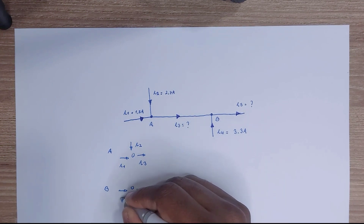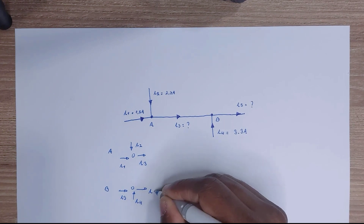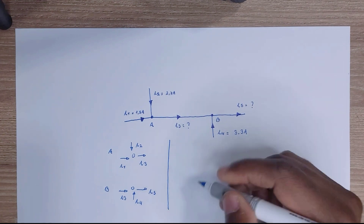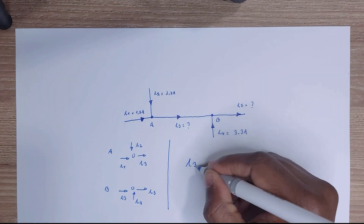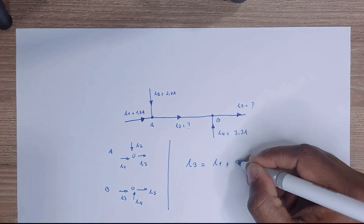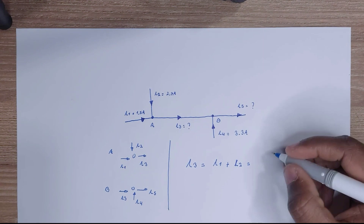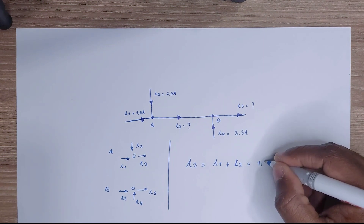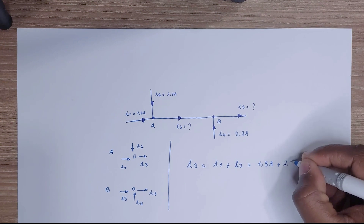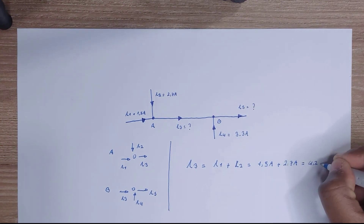Our problem here is to calculate I5. However, in order to do this, we need to know first current I3. Regarding Kirchhoff's current law, current 3 is going to be equal to current 1 plus current 2. Replacing with the real values, that's going to be 1.5 amps plus 2.7 amps, equal to 4.2 amps.